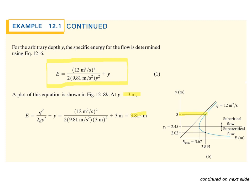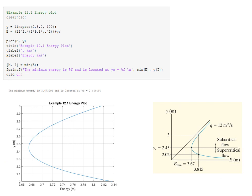To answer part B — finding the alternate depth with the same specific energy but below the critical depth — this can be done graphically. Using MATLAB (or the free alternative Scilab), we can plot the specific energy diagram and read off the minimum value, then identify the two points on the curve that share the same specific energy.